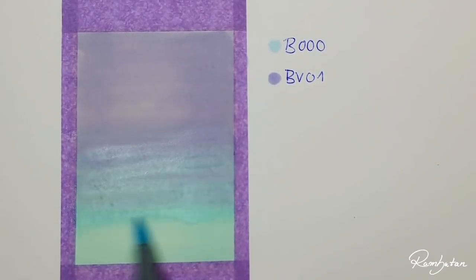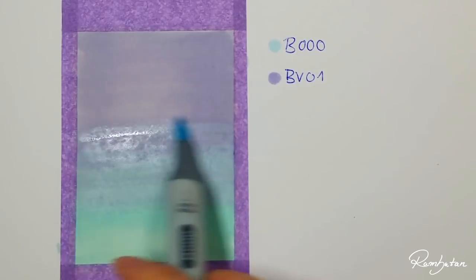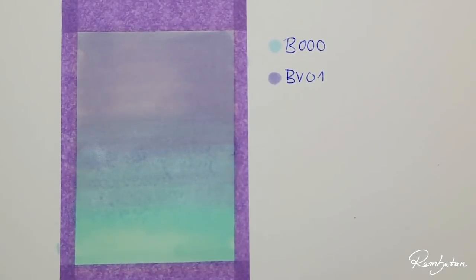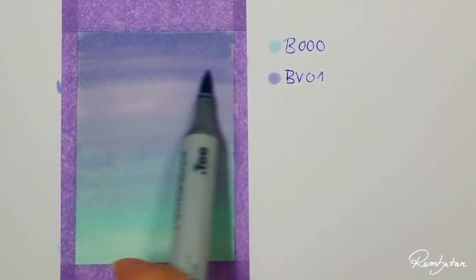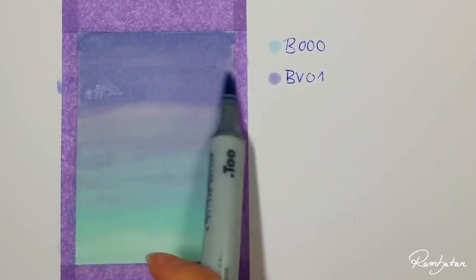Now you have a color gradient, but it looks a bit weak. So now you add a bit of depth with BV04 blueberry so the gradation above looks more intense.